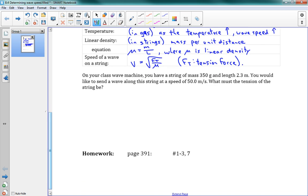All right. We're going to put that all together now on this next problem. It says, on your class wave machine, you have a string of mass 350 grams and length 2.3 meters. You would like to send a wave along this string at a speed of 50 meters per second. So, what must the tension of the string be? Okay. Well, we have V is equal to the square root of Ft over mu, which means that I can rearrange this guy to say that V squared is equal to Ft over mu, which says that Ft is equal to mu V squared.